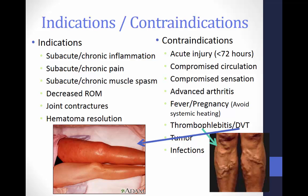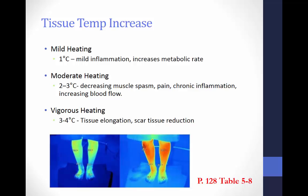There is a table for indications and contraindications listed in Table 5-7 on page 127 in the Starkey text. The magnitude of heating effects is based on the temperature increase of the target tissue. Mild heating — 1 degree Celsius or 1.8 degrees Fahrenheit — is utilized for mild inflammation and accelerated metabolic rates. Moderate heating — 2 to 3 degrees Celsius or 3.6 to 5.4 degrees Fahrenheit — is used for decreasing muscle spasm, decreasing pain, reducing chronic inflammation, and increasing blood flow. Vigorous heating — 3 to 4 degrees Celsius, most commonly 4 degrees Celsius or 5.4 to 9 degrees Fahrenheit — is used for tissue elongation, scar tissue reduction, and inhibition of sympathetic activity. This information can be found on page 128 in Table 5-8 in the Starkey text.